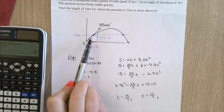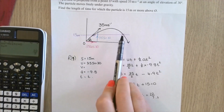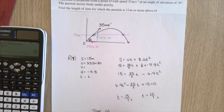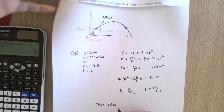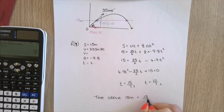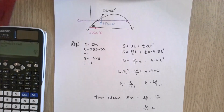The shorter time t = 10/7 is when the particle first reaches 15m, and t = 15/7 is when it comes back down to 15m. The time above 15 metres is 15/7 − 10/7 = 5/7 of a second.